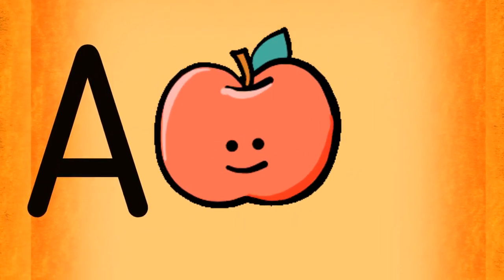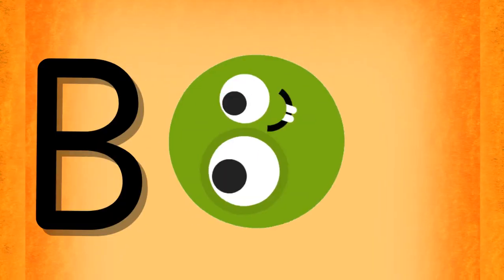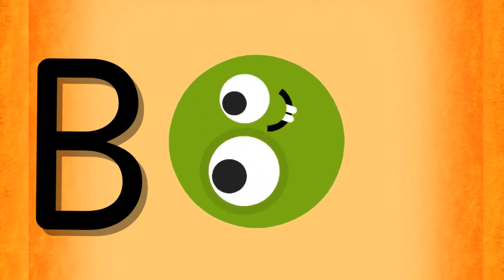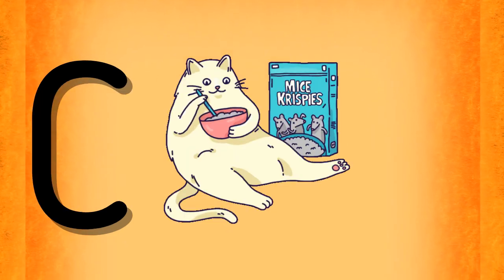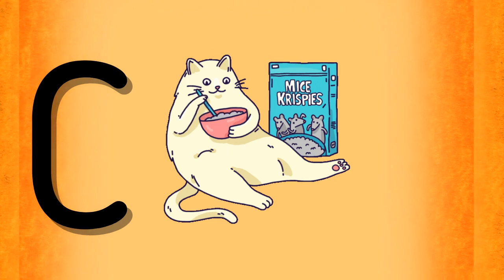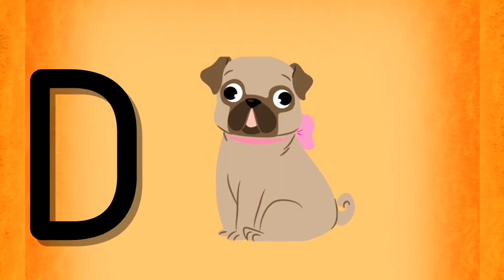A is for Apple, A-A-Apple. B is for Bull, B-B-Bull. C is for Cat, C-C-Cat. D is for Dog, D-D-Dog.